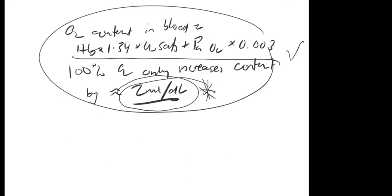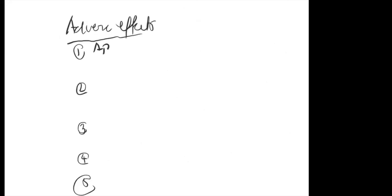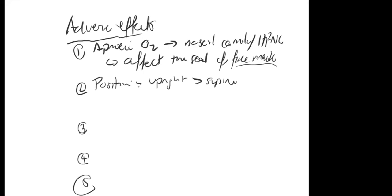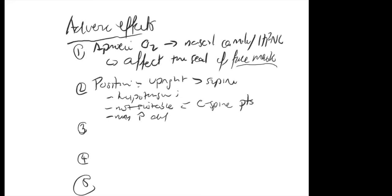Now discuss adverse effects of the methods. For apnoeic oxygenation with nasal cannulas or high-flow nasal cannulas, a potential downside is that it affects the seal of your face mask. For head-up positioning: limits cerebral perfusion if concerned about hypotension, not suitable with C-spine patients, and in morbidly obese patients positioning them very upright may actually increase difficulty of intubation.